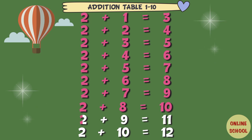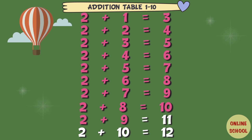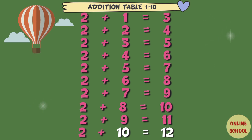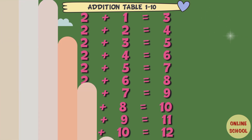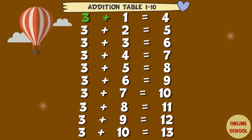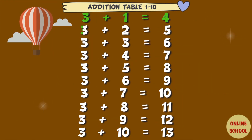2 plus 9 equal 11, 2 plus 10 equal 12. Table 3: 3 plus 1 equal 4.